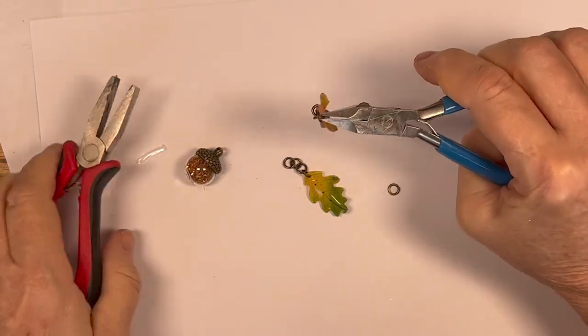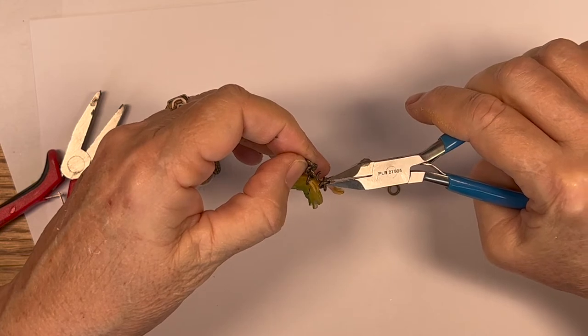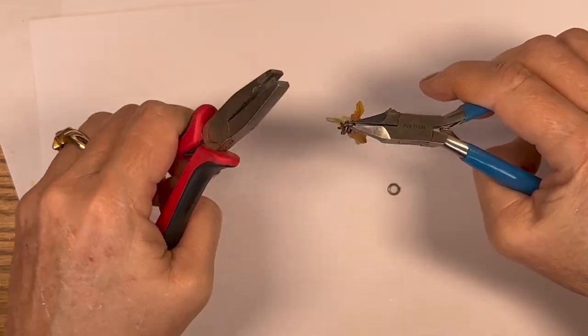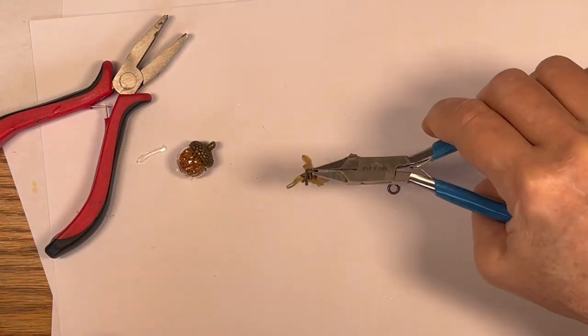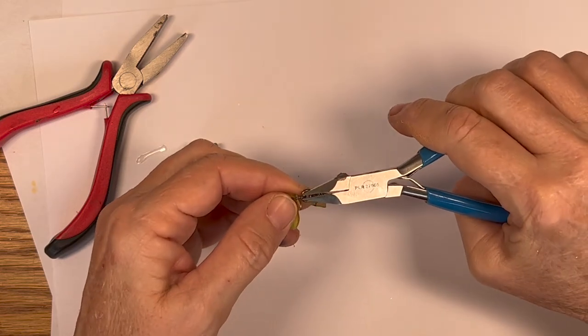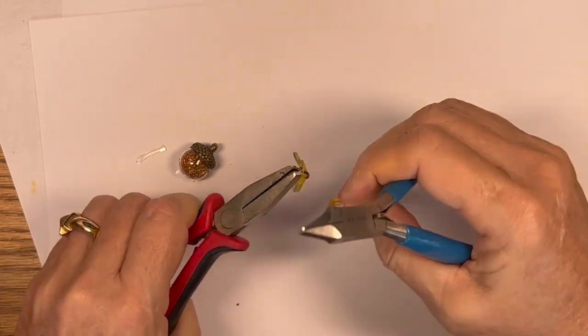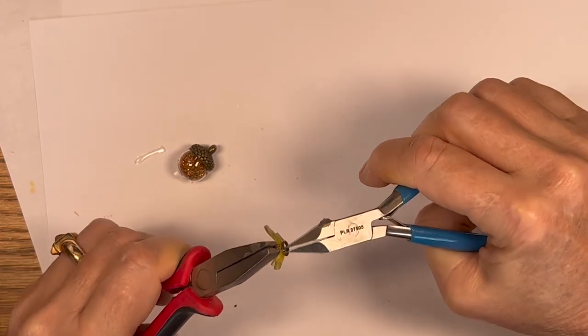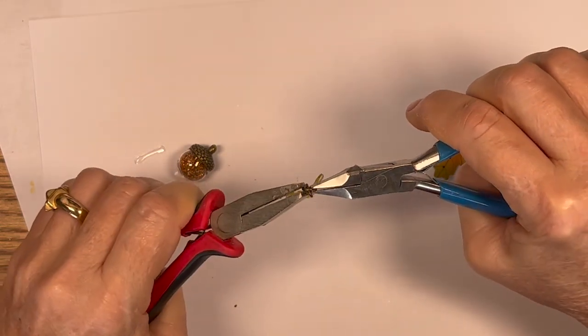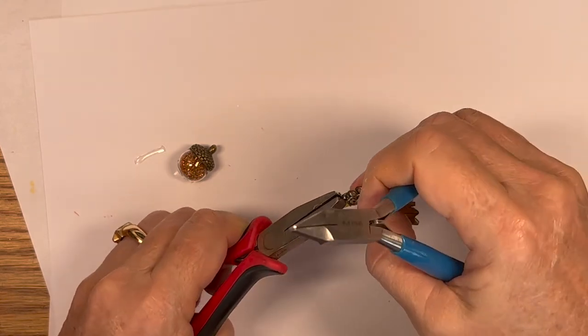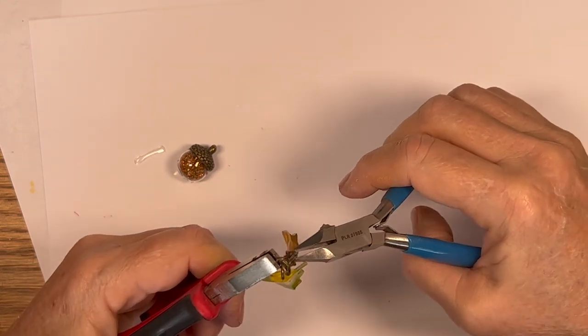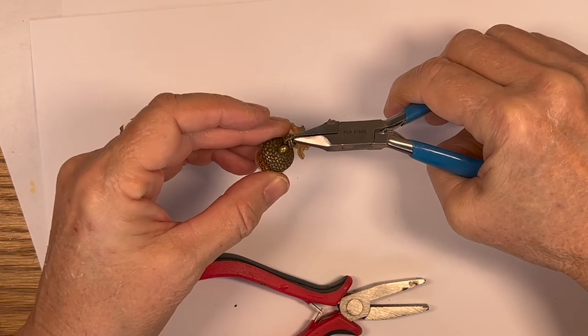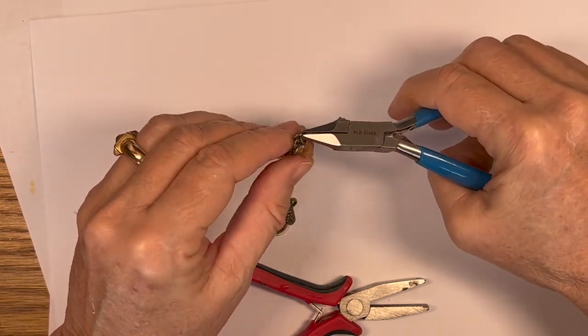And then we're going to attach this one up here. So we've got this and then I might add one more in between here. See how we want to have a little bit of a drape. Then we've got our acorn, which I'm going to come down here on the second one.